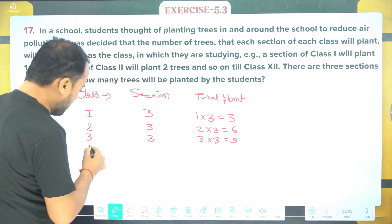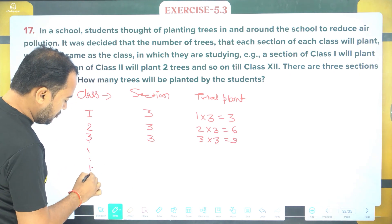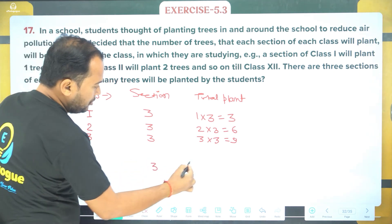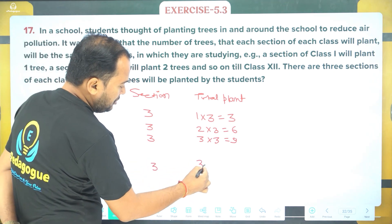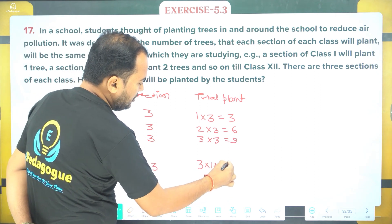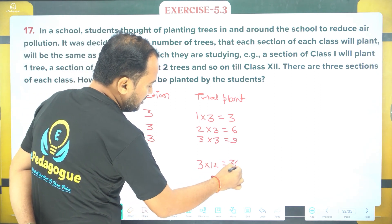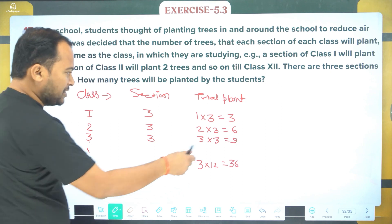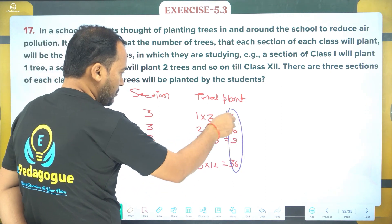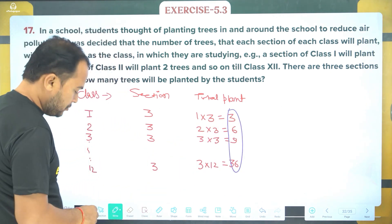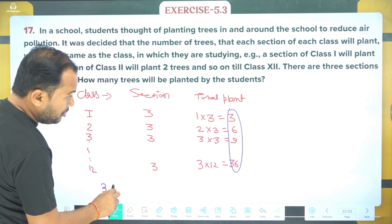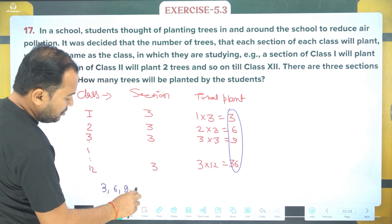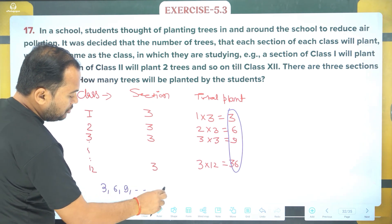For class 12, there are 3 sections, so this is 3 into 12, which is 36. So the series becomes: 3, 6, 9, dot dot dot, 36.